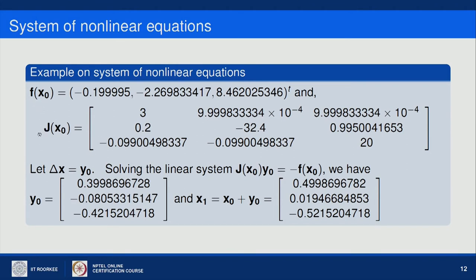We then solve the system J(x₀)·Δx = −f(x₀). The solution gives Δx₁ = 0.39986, Δx₂ = −0.080533, and Δx₃ as computed. Adding these corrections to the initial solution gives the first iteration solution: x₁ ≈ (0.49, 0.019, −0.521).